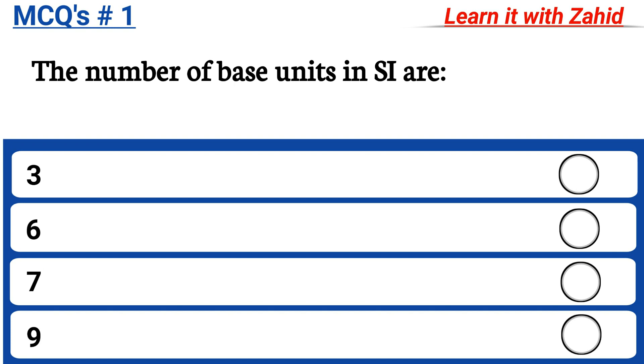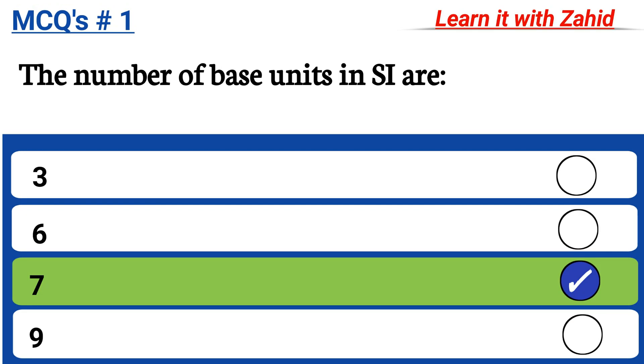The number of base units in System International are 3, 6, 7, 9 and the correct answer is 7.